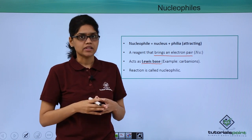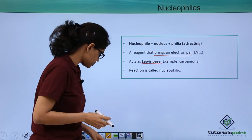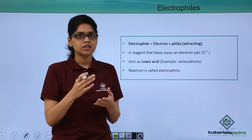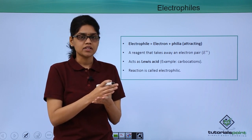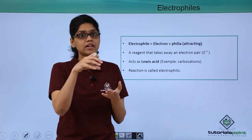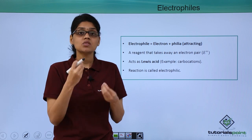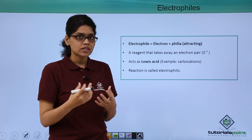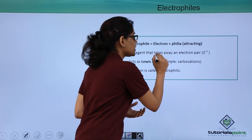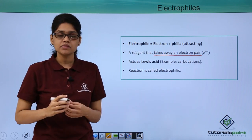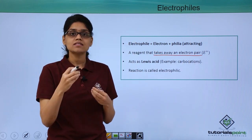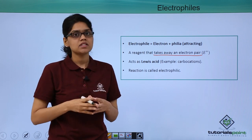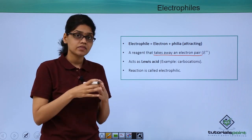Now let's study about electrophiles. Electrophiles, similarly, if we break into two components, it becomes 'electron' plus 'philia,' meaning it is electron-seeking or electron-attracting. So it is any reagent that takes away an electron pair or seeks an electron-rich center. For the same reason, these species act as Lewis acids.